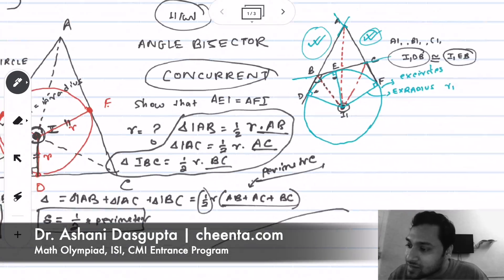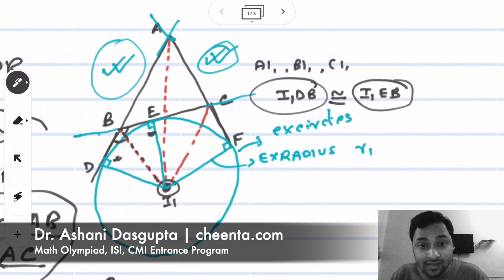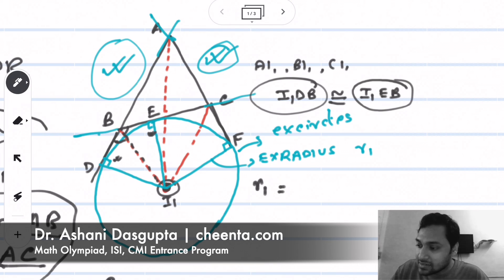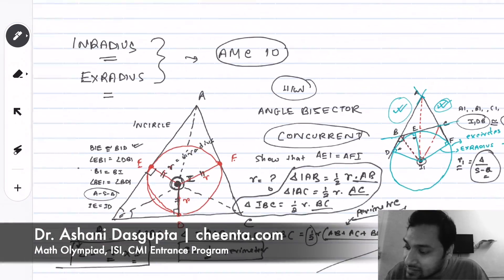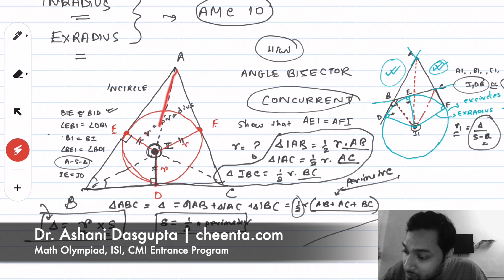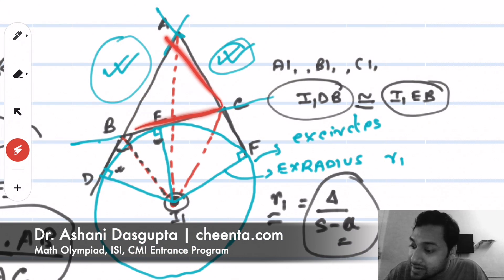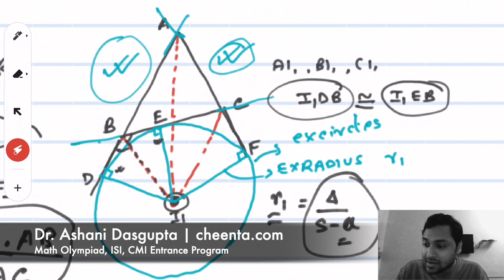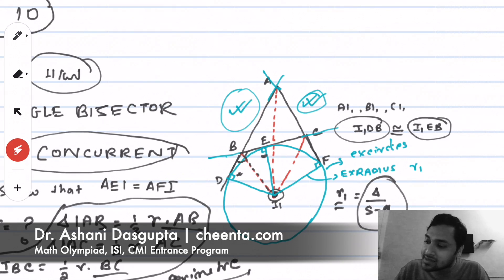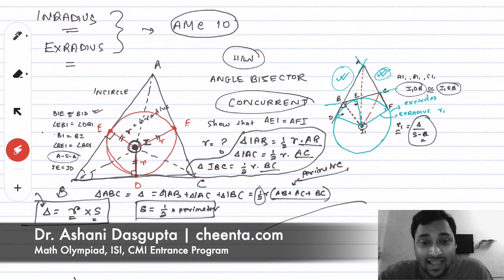Using a similar strategy, you can find a formula for the exradius R₁. The result is R₁ equals delta divided by (s minus a), where a is the length of side BC — the side opposite vertex A. So you take the semi-perimeter, subtract the side opposite to vertex A, and divide the area of the triangle by that quantity to get the first exradius. We understand this, and in the next video we will use these formulas to solve a problem from the American Mathematics Competition.